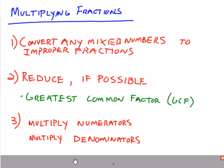Since you'll have more than one fraction, you can reduce any number that's in a numerator on the top with any number that's on the bottom, and you do so, again, by greatest common factor.